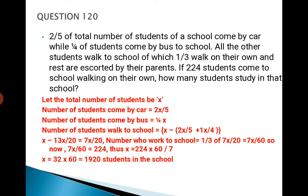I beg your pardon, here it should not be 'work', it should be 'walk to school'. So now 7x/60 is equal to 224, which has been given. That means children who are walking to school on their own. So 7x/60 is equal to 224. Thus x is equal to 224 times 60 divided by 7, and therefore x is 32 times 60, which is 1920 students in the school.